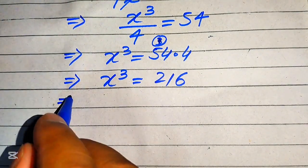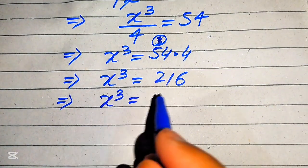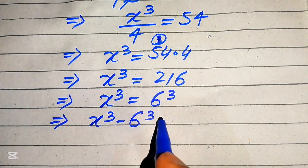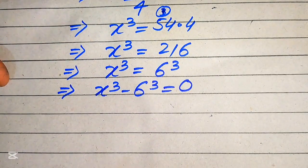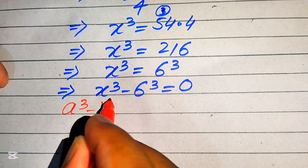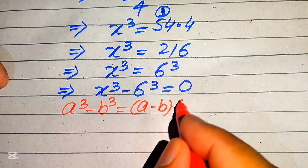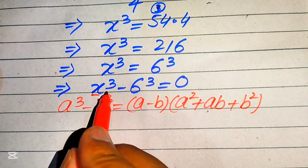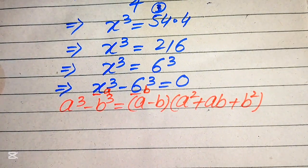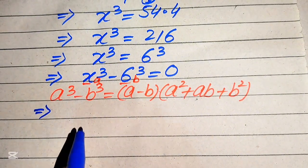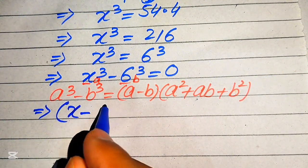We know that 216 is the cube of 6, so we write this as 6 cubed. Moving 6 cubed to the left-hand side gives x cubed minus 6 cubed equals 0. Now we apply the difference of cubes formula: a cubed minus b cubed equals (a minus b)(a squared plus ab plus b squared), where a is x and b is 6.